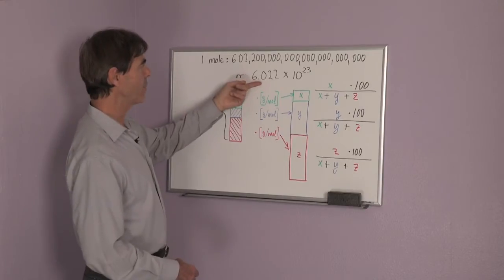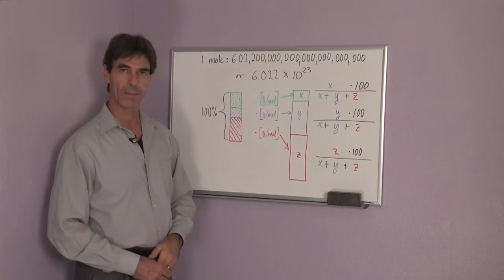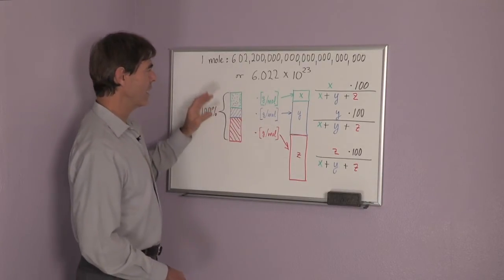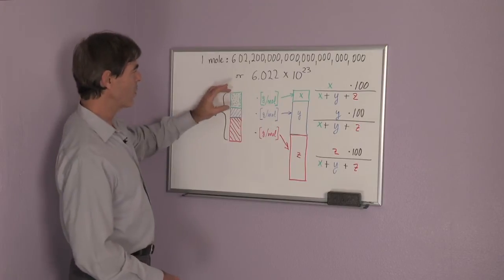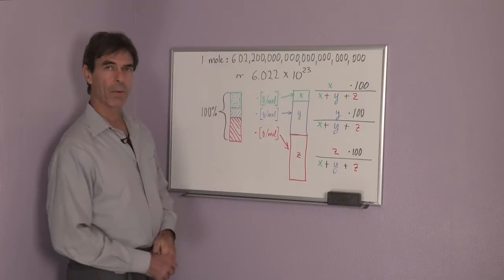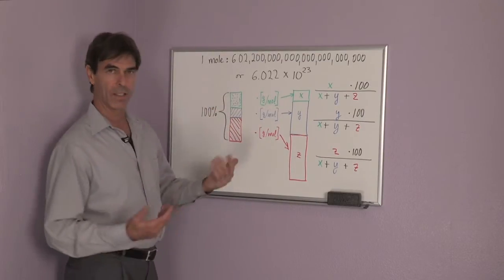6.022 times ten to the twenty-three. It's a very large number. So suppose we're given the mole fractions of several components in a substance: green, blue, and red. I'm going to denote them green, blue, and red.